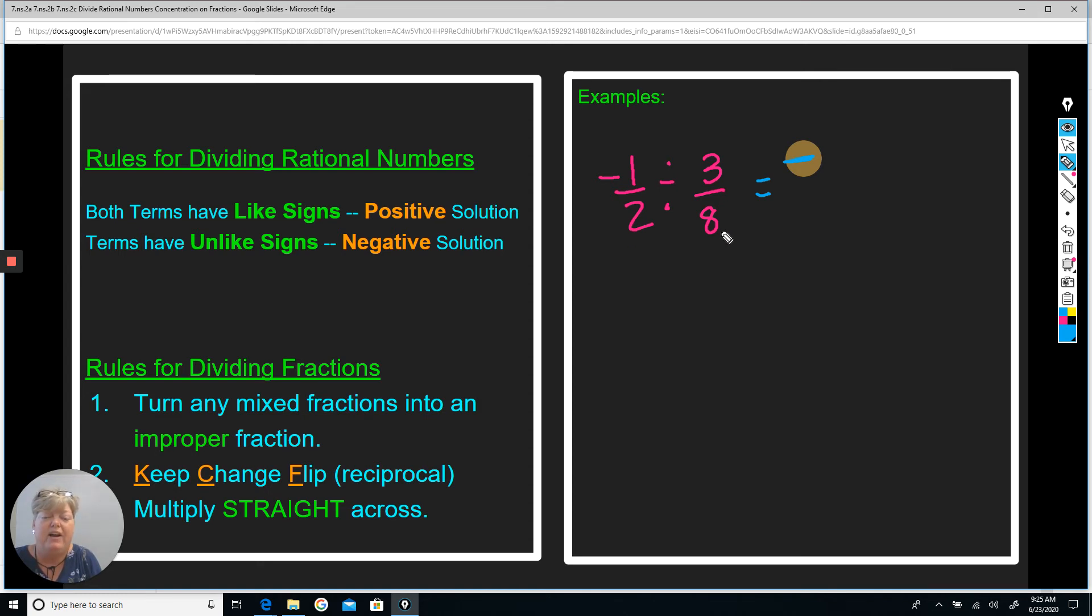I don't have any improper fractions. So I'm going to go ahead and do keep change flip, which is the reciprocal. I'm going to keep the first term. I'm going to change it from divide to multiply. And I'm going to take the three eighths and I'm going to flip it over and do eight over three.